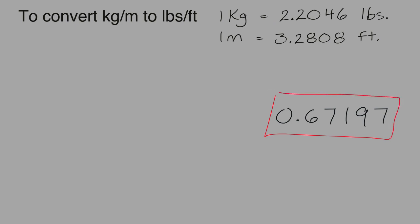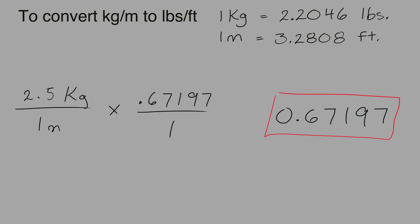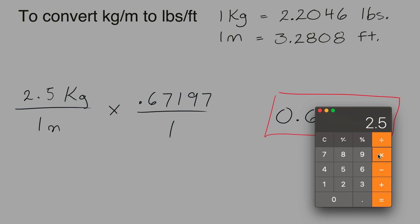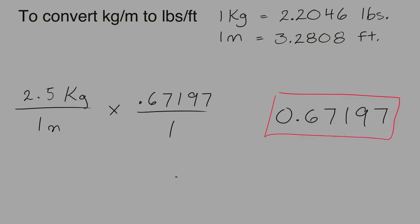Let's try the same problem using this method. If you have 2.5 kilograms per meter and you multiply it by our conversion factor of 0.67197 over 1, then 2.5 multiplied by 0.67197 equals 1.6799 — the same answer we had before. So this is pounds per foot.